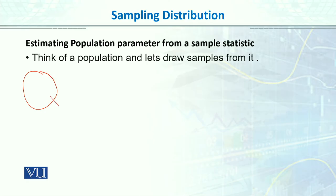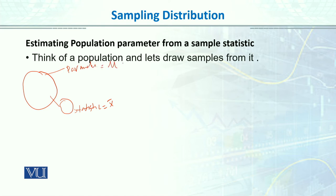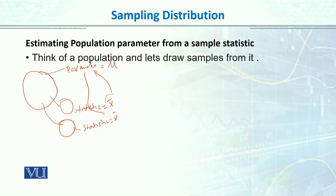A sampling distribution is a probability distribution of a statistic. Just as we earlier built frequency distributions over raw scores (x scores) and calculated their frequencies, a sampling distribution uses sample statistics like mean or standard deviation instead of raw scores. It is a distribution of a statistic obtained from a larger number of samples drawn from a specific population. Let's do a concrete example: suppose you have a population, you draw a sample, calculate its statistic (say the mean), and use that to estimate the population parameter mu.